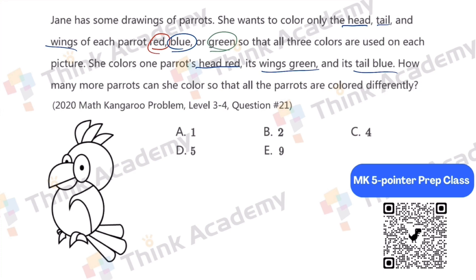For this question, we want to only color the head, the tail, and the wings. For the head, we have three options, right? They are red, blue, or green.